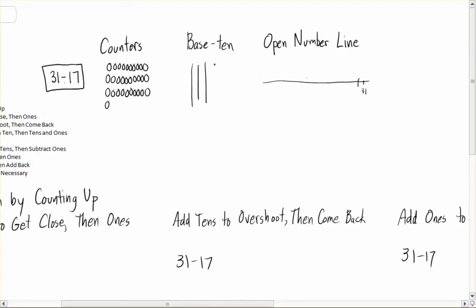If we were going to model 31 minus 17 with counters, we'd lay out 31 counters, then take away 17 of them, and then count what's left.